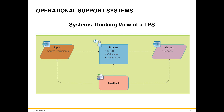This picture shows an overview of a TPS. Source documents are fed to processes as input. Inside the process, those input information are transformed through procedures such as create, read, update, and delete — referred to as CRUD — and then payroll will be calculated and a summary of benefits will be provided. The result will appear as a report, and feedback provides assessment to all three steps.